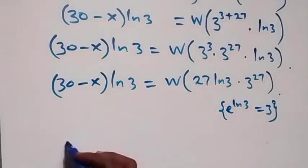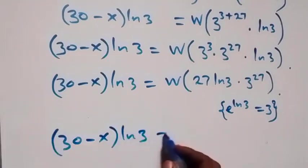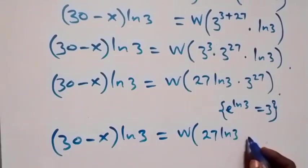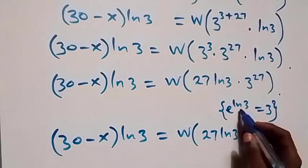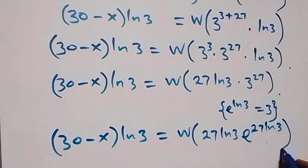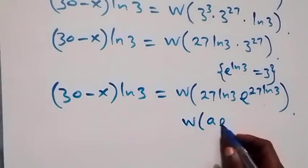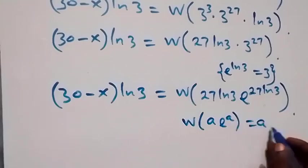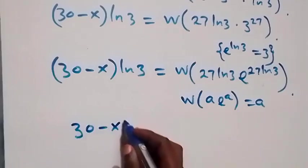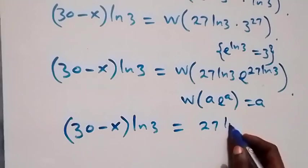Then this becomes 30 minus x times ln 3 equals W of 27·ln 3 times e^(ln 3 · 27). Comparing what we have with the W function property W(a·e^a) equals a, the power is the same as the coefficient, so this simply becomes 30 minus x times ln 3 equals 27 times ln 3.